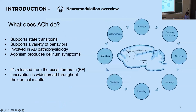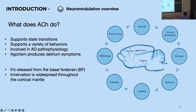What does acetylcholine actually do? Many things. It supports state transitions and a variety of behaviors. It's involved in the pathophysiology of Alzheimer's disease, and disrupted cholinergic release can produce delirium-like symptoms. It is released from the basal forebrain and its innervation is quite widespread throughout the cortical mantle.